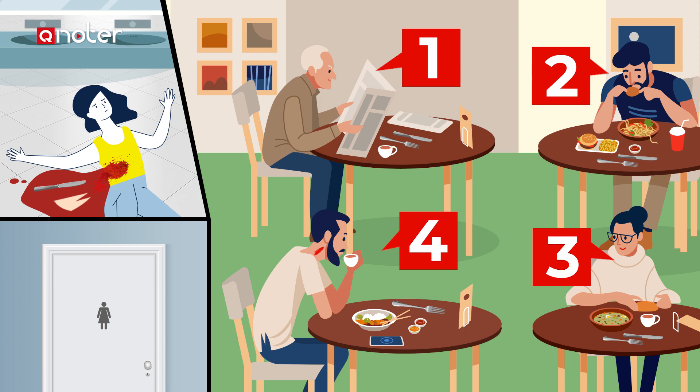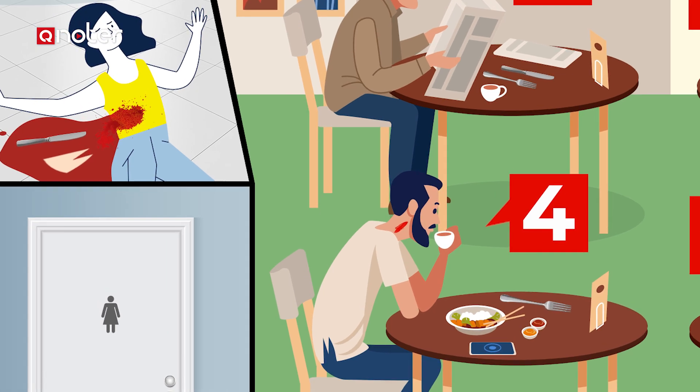Answer: Person number four is the killer. He's sitting next to the bathroom, his knife is missing, his shirt is torn, and there is a piece of his shirt next to the victim, and he has a scratch on his neck. All these are indications that he is the killer.